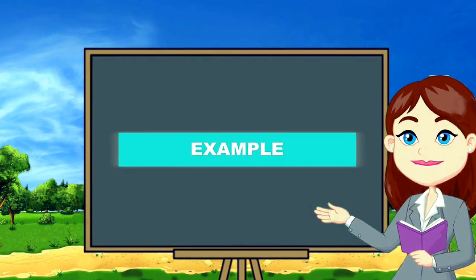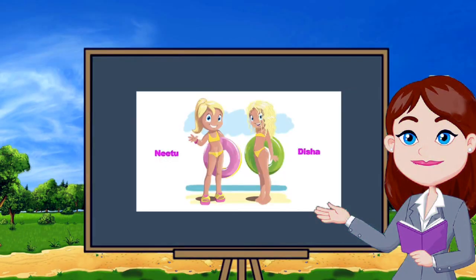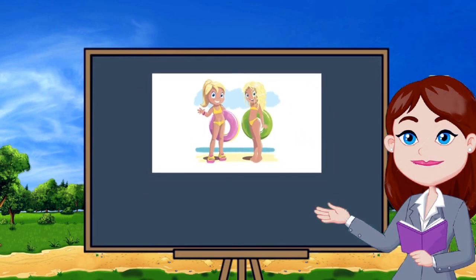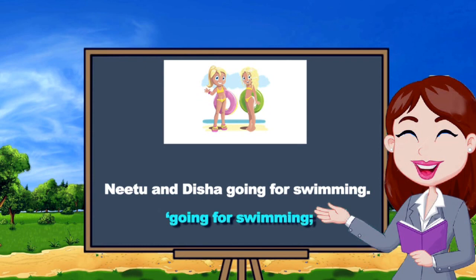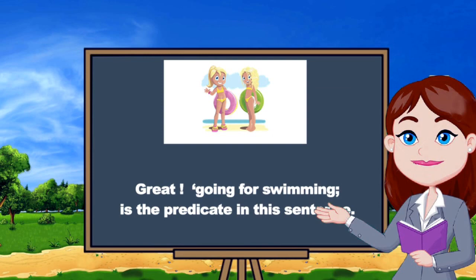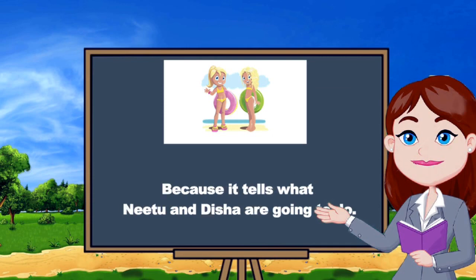Let's try another one. Are you ready, children? Let's do it together: 'Neetu and Disha are going for swimming.' You have to tell me what is the predicate in this sentence. Very good, children! 'Going for swimming' is the predicate in this sentence because it tells what Neetu and Disha are going to do.